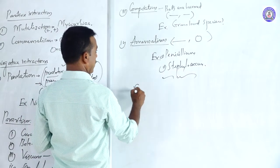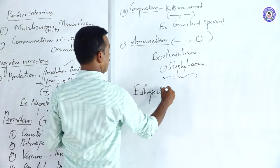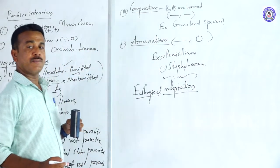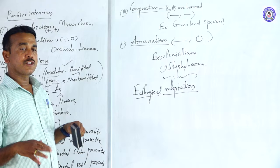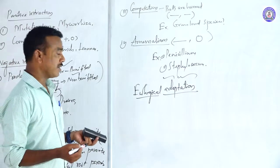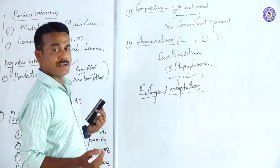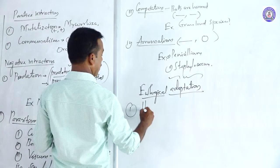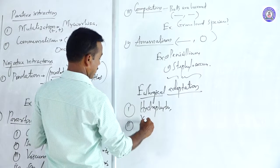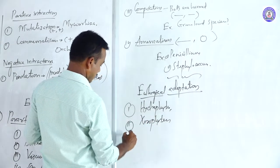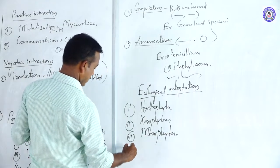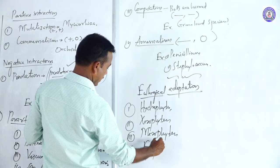Next, we are going to discuss ecological adaptations. Adaptation means some organisms are structurally modified to survive under any one environment. That is commonly called adaptation. Based on adaptation, plants can be classified into various types: namely, hydrophytes, xerophytes, mesophytes, and epiphytes.